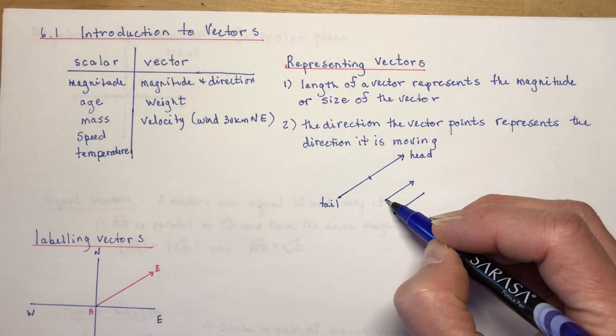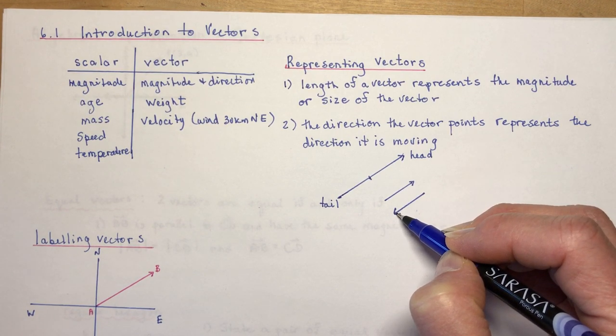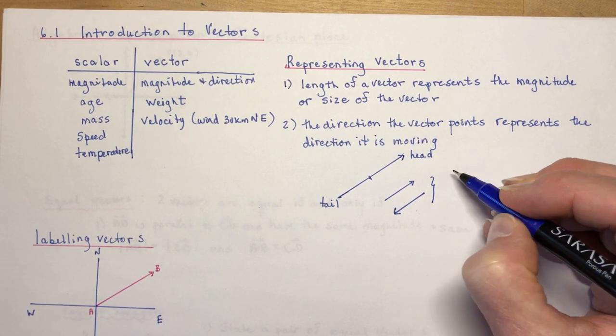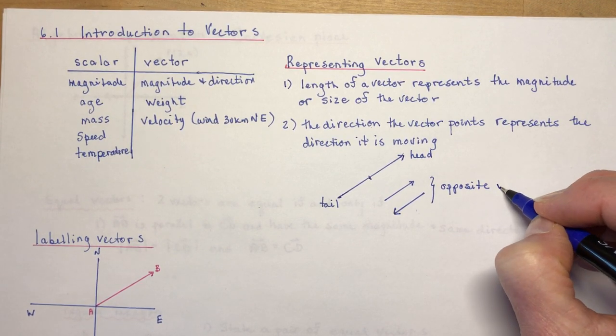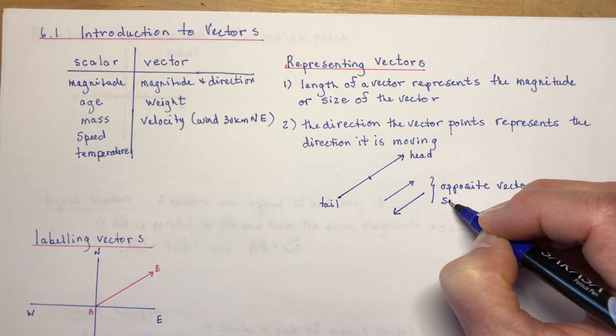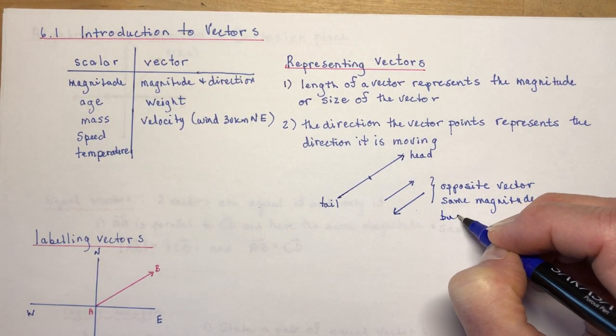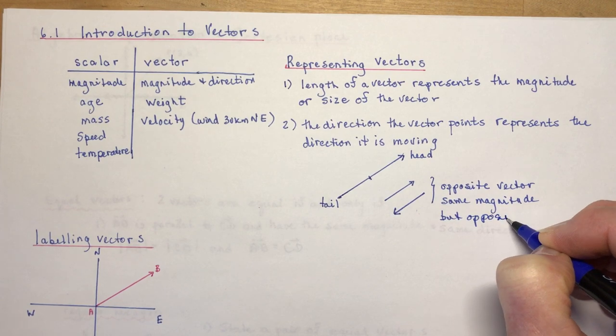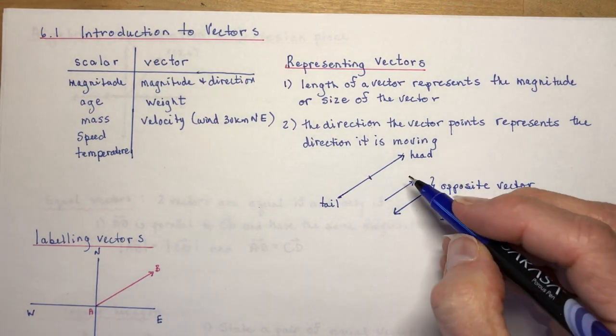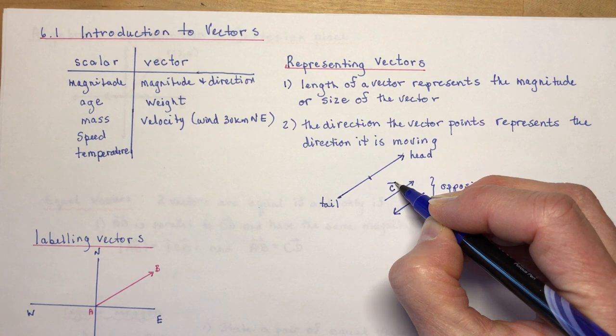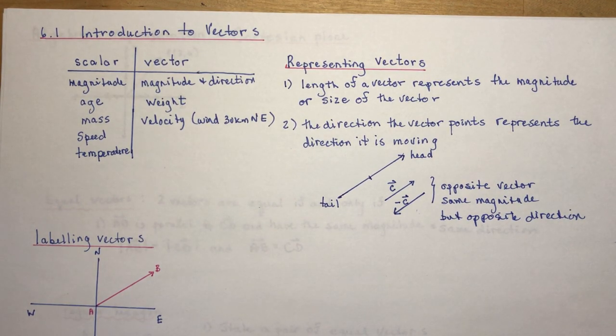If you have a vector going this way and you have another one of equal magnitude going in the opposite direction, these are called opposite vectors. So what makes them opposite is that they have the same magnitude, same length if I measured it, same magnitude but opposite direction. So if this was vector C, and vectors you put a little hat over it like this, this would be negative C.